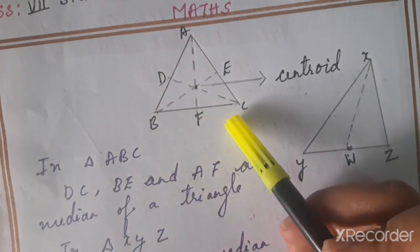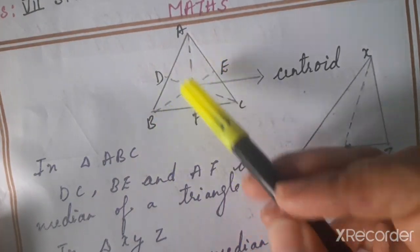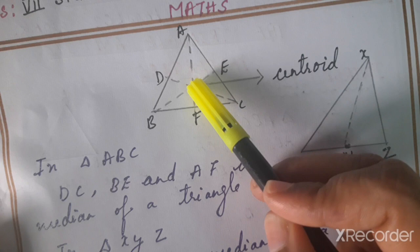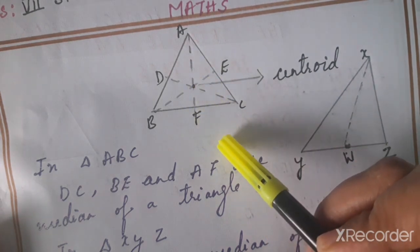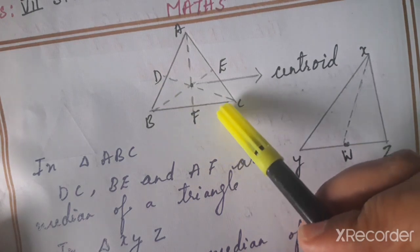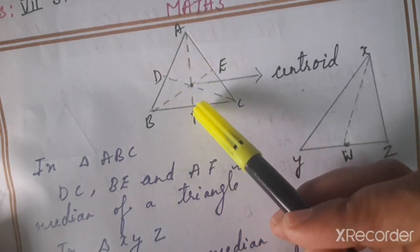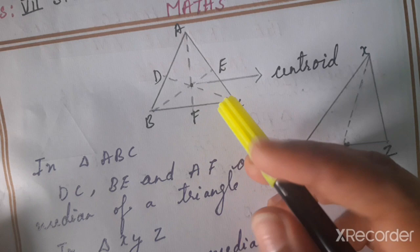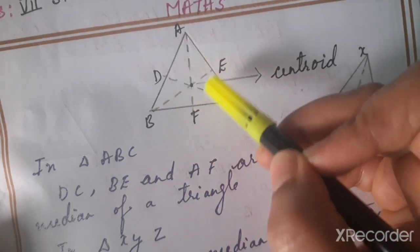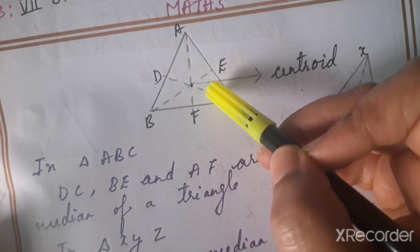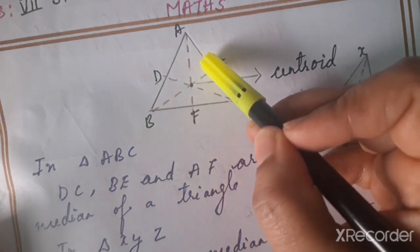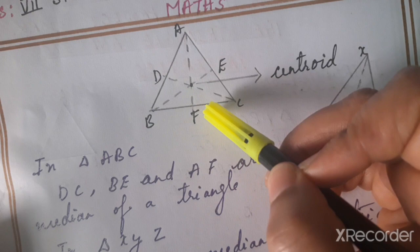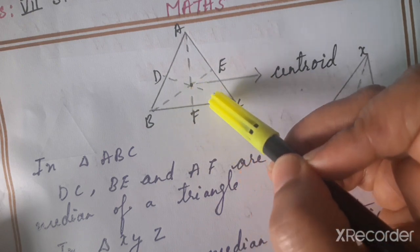In triangle ABC, which is an equilateral triangle, BE, AF, and DC are medians, and they all meet at the centroid. Because the triangle is equilateral, the median and the altitude are the same. Altitude means a line segment that meets the opposite side at exactly 90 degrees. So in an equilateral triangle, every median is also an altitude.